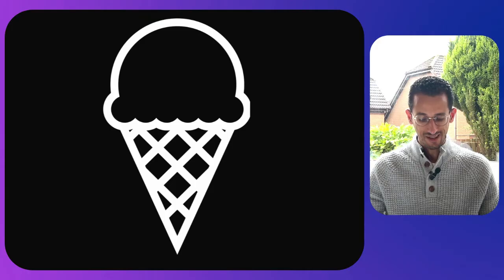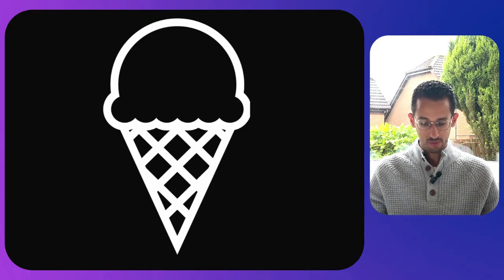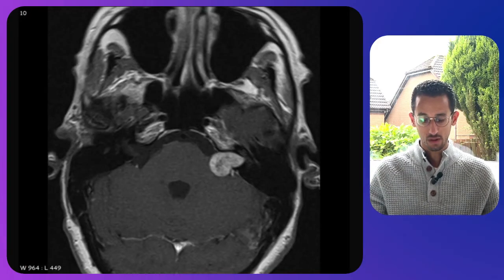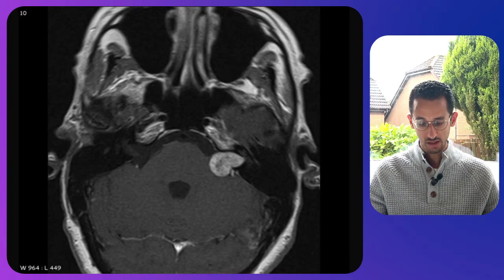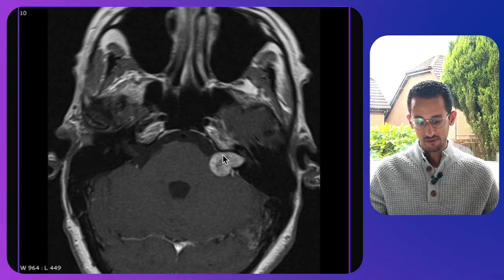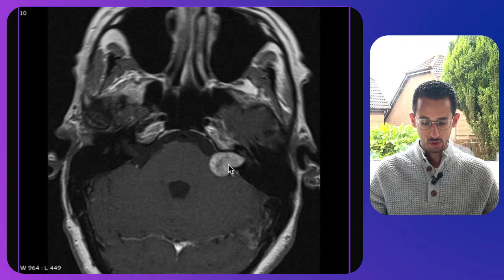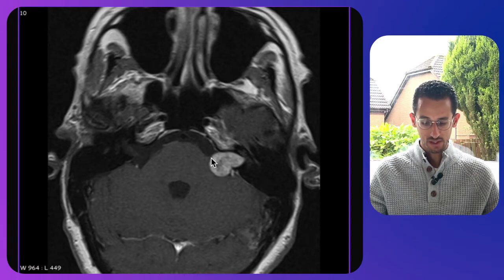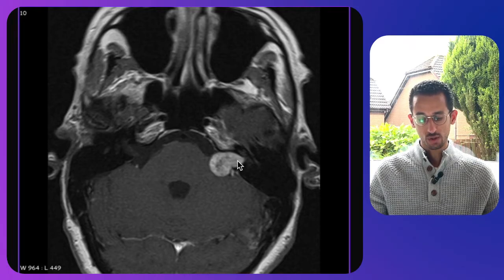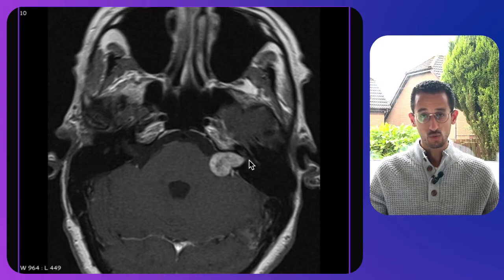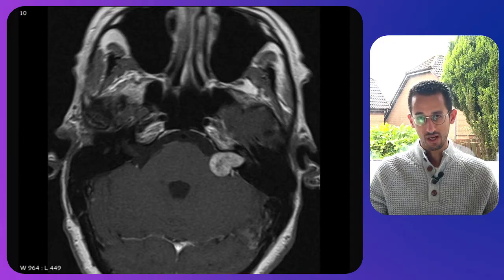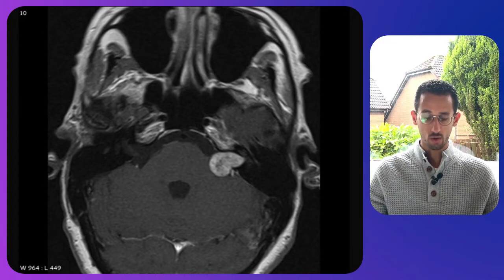We'll start with the first one which looks like an ice cream cone. Looking at this MRI scan, you can see there is a lesion here around this area. This is a vestibular schwannoma and it looks like an ice cream cone because of this part of the tumor which extends towards the brain stem and towards the cerebellopontine angle, while the base of the cone correlates with the intracanalicular part of the tumor. This ice cream cone appearance is characteristic for vestibular schwannoma or acoustic neuroma.